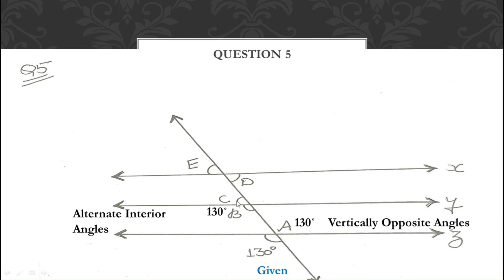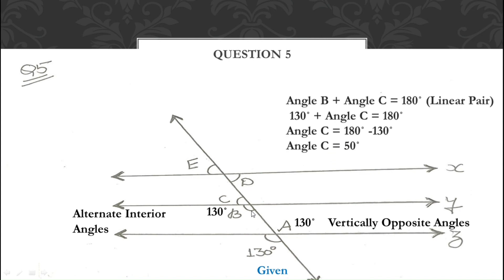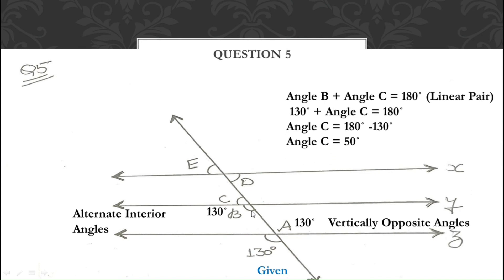Now angle B and angle C together form a semicircle on the line — they form a linear pair — so angle B + angle C = 180°. Since angle B = 130°, angle C = 180 − 130 = 50°. Now lines X and Y are parallel, and angles C and D are alternate interior angles, so angle D = angle C = 50°.